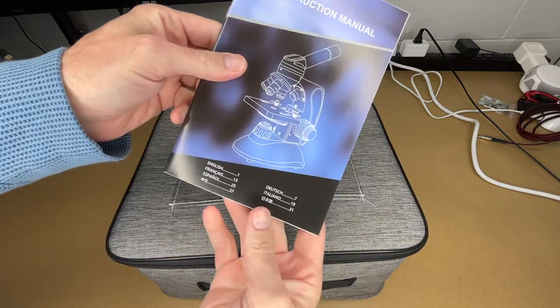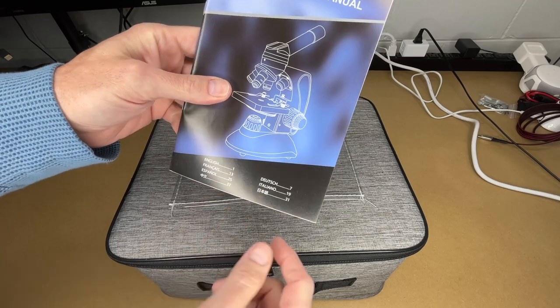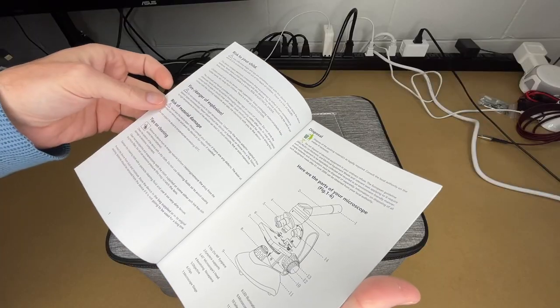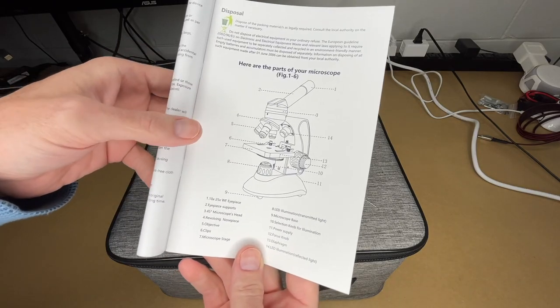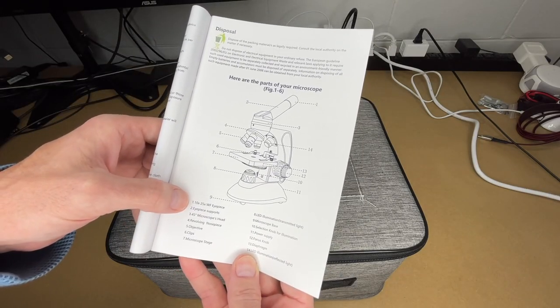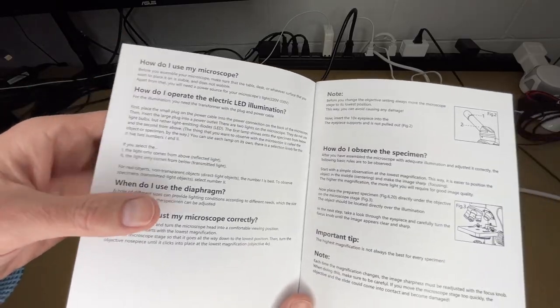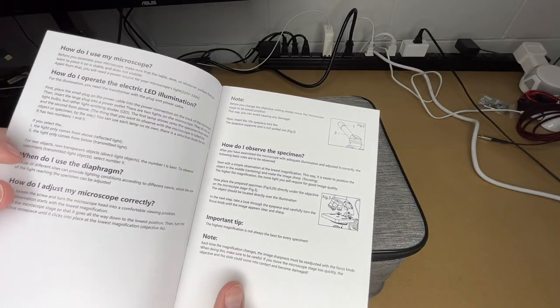Let's pull the manual out here. It has a number of languages here, looks like there's about 12 pages per language. I'm not going to cover everything in here, you'll want to read through this on your own. This shows the different parts of the microscope. It has two different eyepieces: 10x and 25x. Here we have usage instructions.